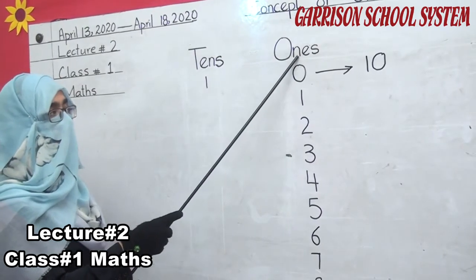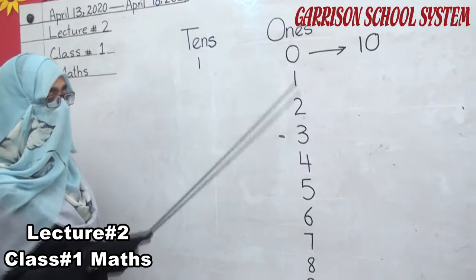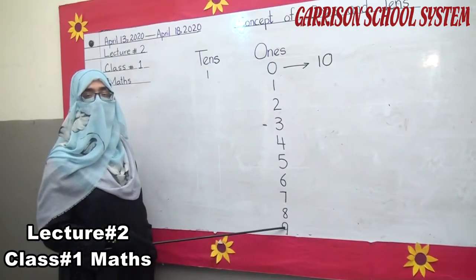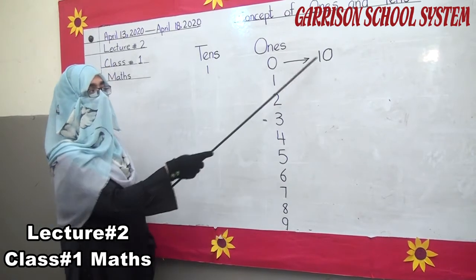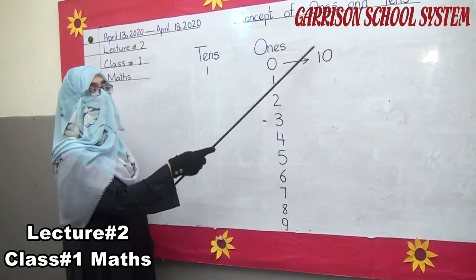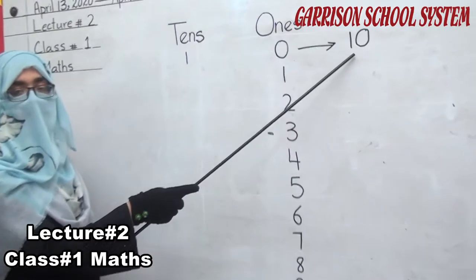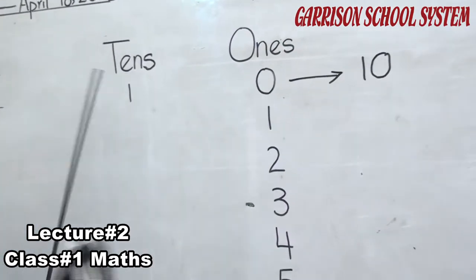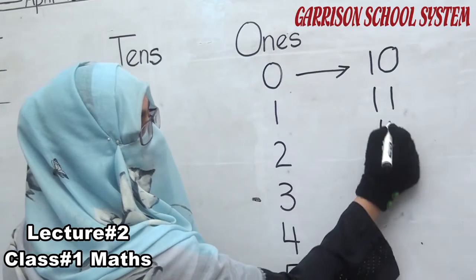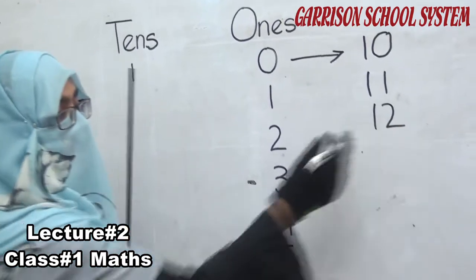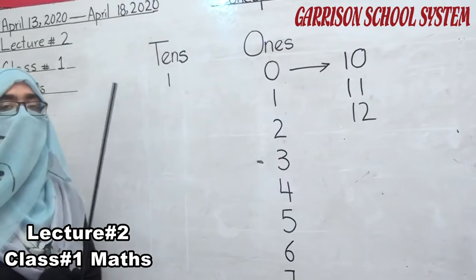So students, ones means a single number — that is from zero to nine, always we call them ones. And when from these numbers we make two-digit numbers that come in two-number form, it is called tens — like ten, eleven, twelve, and so on. These are two-digit numbers and two-digit numbers we call tens.